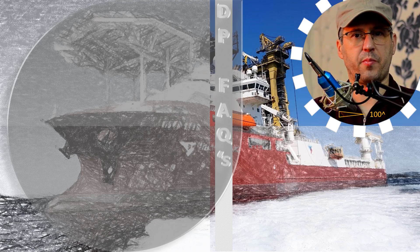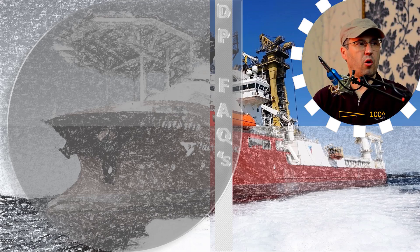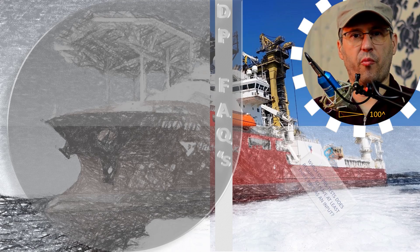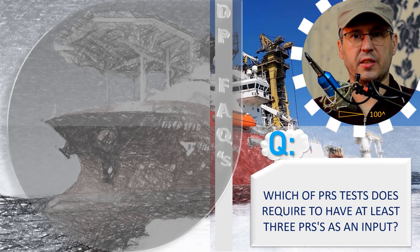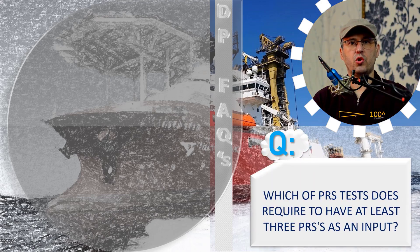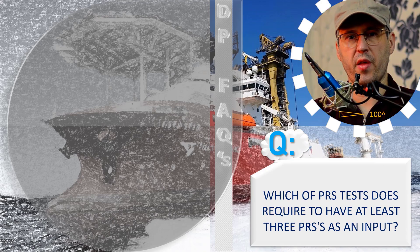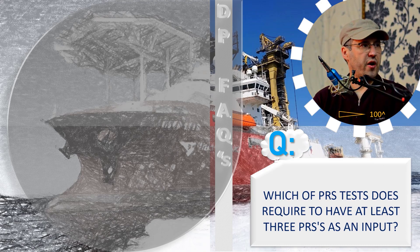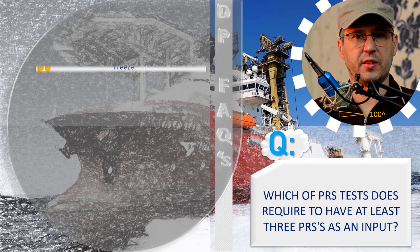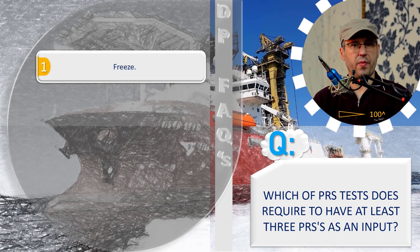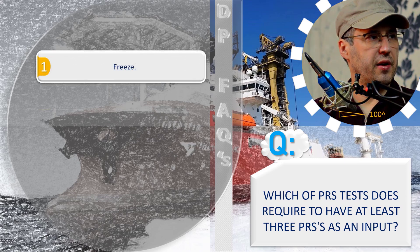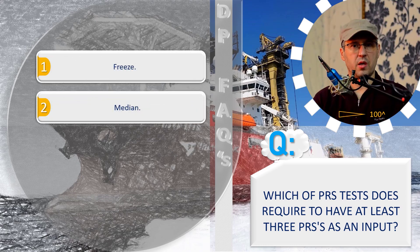Let's check the next paragraph. Hope you are doing well. Which of the PRS tests require at least three PRS as an input? What do you think about that? Among the variants: number one — median, number two — number three — divergence, and number four — of course variants. Any ideas please?